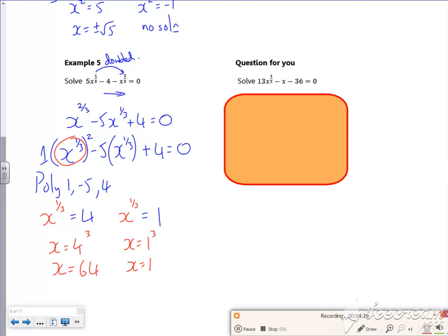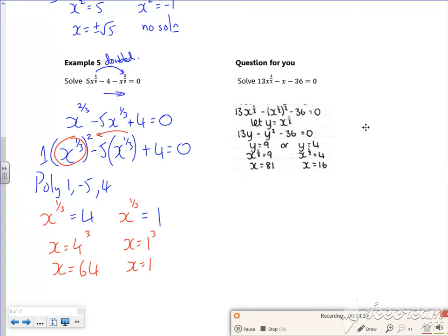So if you can spot it that the power is doubled, it's a disguised quadratic. There's another one here to have a look at. So this one would be a power 1 here and if you look the power is doubled. So if I rewrite it as x to the power 1 minus 13 x to the power of a half plus 36 is 0, I'm happy.